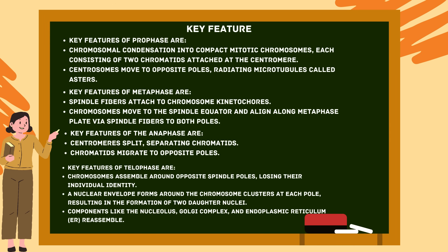Key features of prophase: chromosomal condensation into compact mitotic chromosomes, each consisting of two chromatids attached at the centromere; centrosomes move to opposite poles, radiating microtubules called asters. Key features of metaphase: spindle fibers attach to chromosome kinetochores; chromosomes move to the spindle equator and align along the metaphase plate. Key features of anaphase: centromeres split, separating chromatids; chromatids migrate to opposite poles. Key features of telophase: chromosomes assemble around opposite spindle poles losing their individual identity; a nuclear envelope forms around the chromosome clusters at each pole, resulting in two daughter nuclei; components like the nucleolus, Golgi complex and endoplasmic reticulum reassemble.